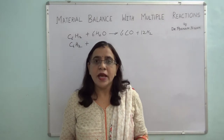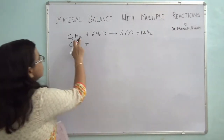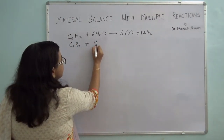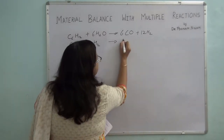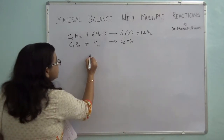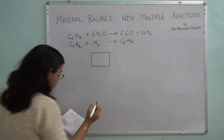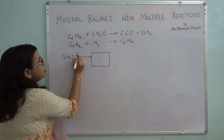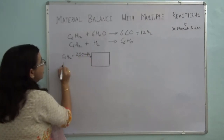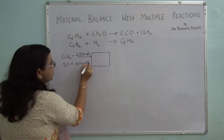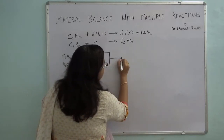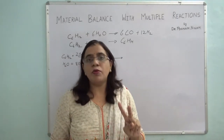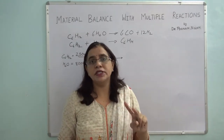You can go and read the problem statement on your own, but I will describe it here. One reaction happening is C6H12 reacting with water to give carbon monoxide and hydrogen. The hydrogen generated then reacts back with the reactant to form C6H14. This is carried out in a continuous reactor where inlet flow rates are given. In this video I will tell you two important points where you tend to make mistakes.